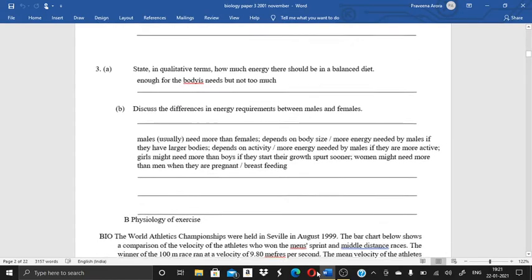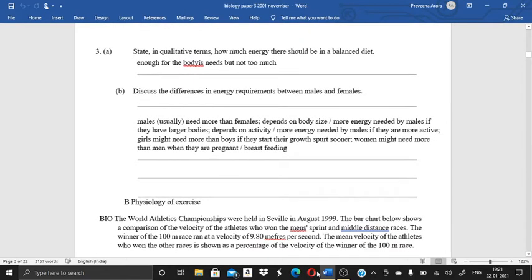So now we come on question number three, that is state in qualitative terms, how much energy there should be in a balanced diet? Then next question B, that is discuss the differences in energy requirement between males and females. Over here also I have given the answer. I have given you the brief description. You have to write down the paragraph yourself. If something is not clear to you, you can just write down in the comment box. Definitely I will revert you back. I will try to solve your problems.